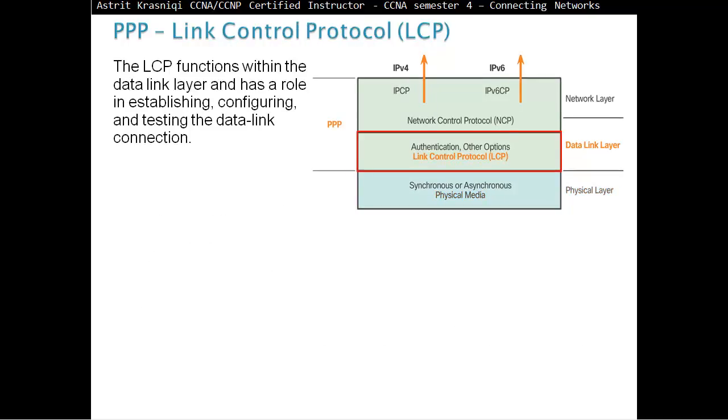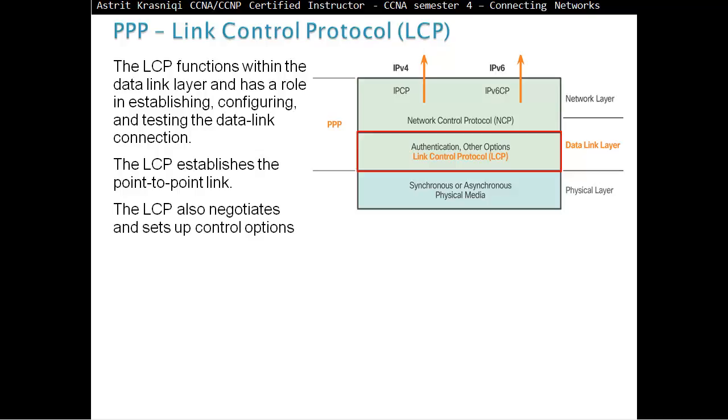The LCP, PPP Link Control Protocol. The LCP functions within the data link layer and has a role of establishing, configuring, and testing the data link connection. The LCP establishes the Point-to-Point Link. The LCP also negotiates and sets up the control options on the Wide Area Network Data Link, which are handled by the NCPs.